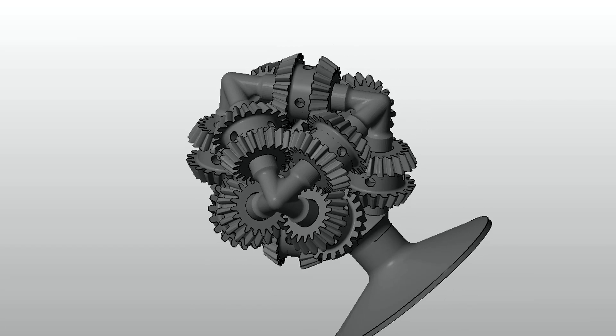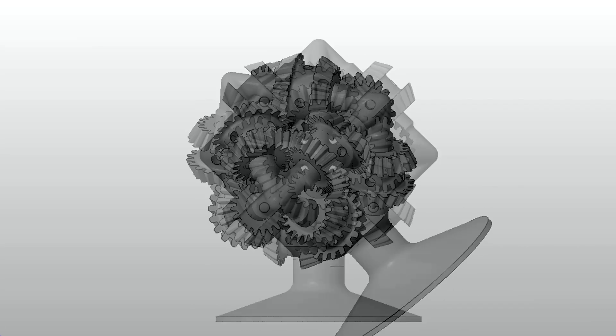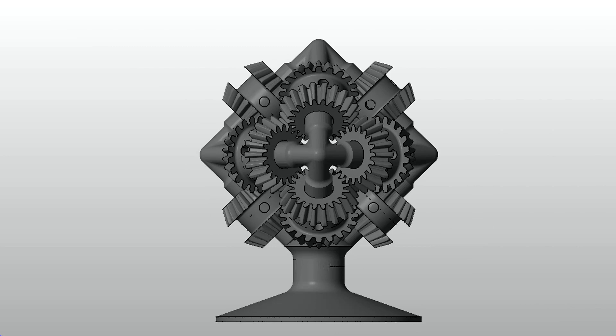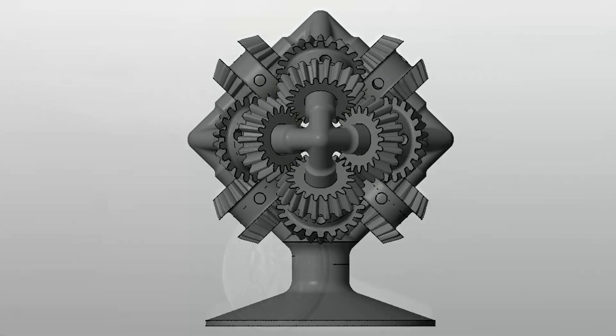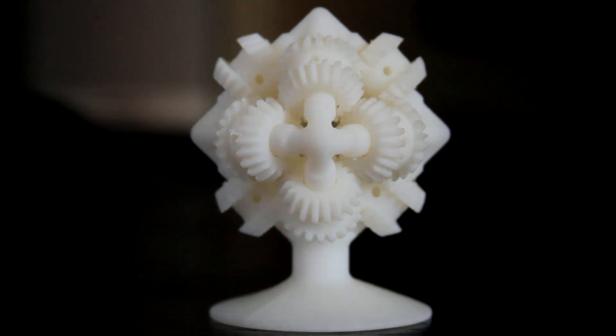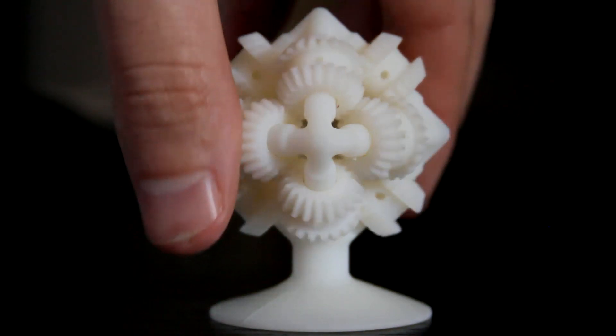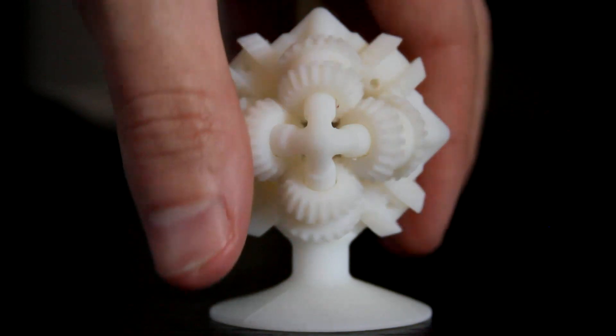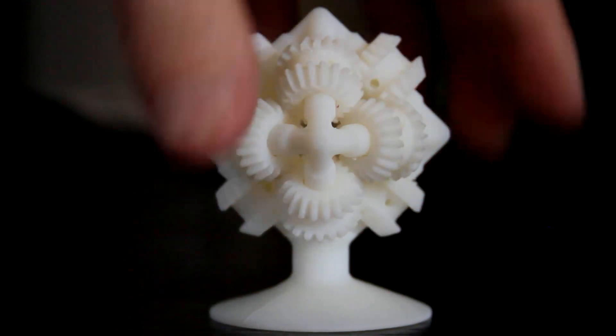However, complexity is no issue for 3D printers, particularly the high-precision polyjet 3D printers. As you can see, here's the part printed all as one piece and fully functioning. Also notice how small this part is, which goes to show just how tight of tolerances these machines can hold.